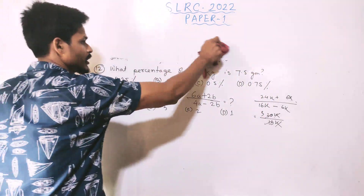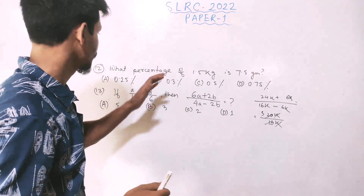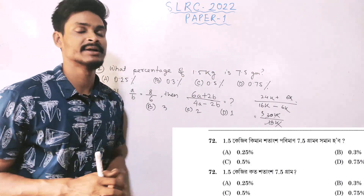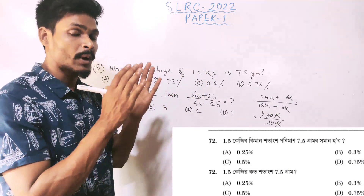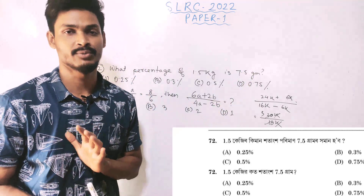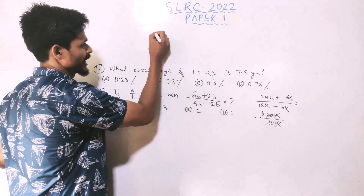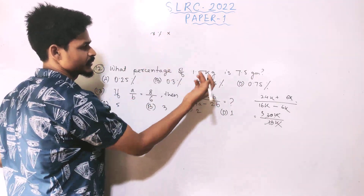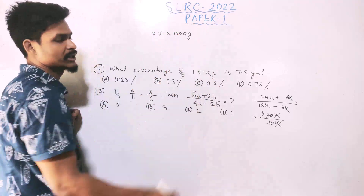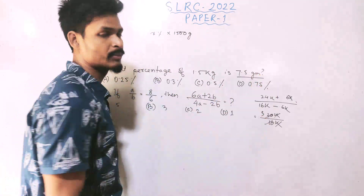The next question: what percentage of 1.5 kg is 7.5 gram? First, convert 1.5 kg to grams — that is 1500 grams. We need to find x percent of 1500 grams equal to 7.5 grams.